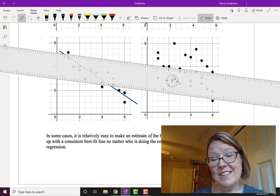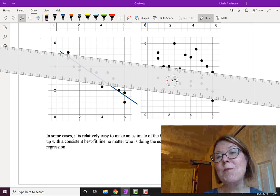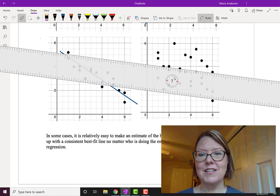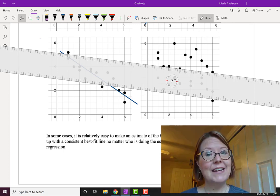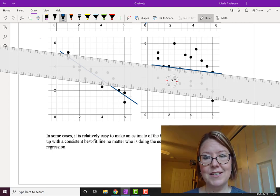Guessing on what that slope is we're all going to choose different values here and this is why we need a more scientific process for this. I'm going to place my straight edge roughly in the middle of the data with just a slight decreasing slope.